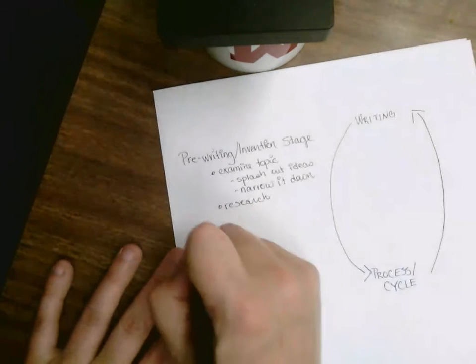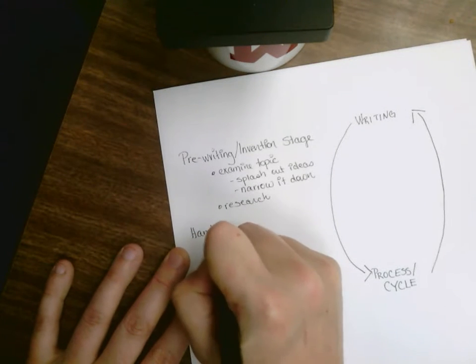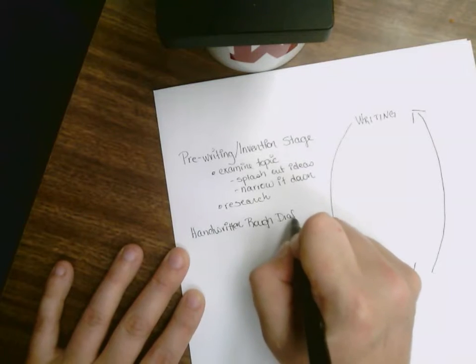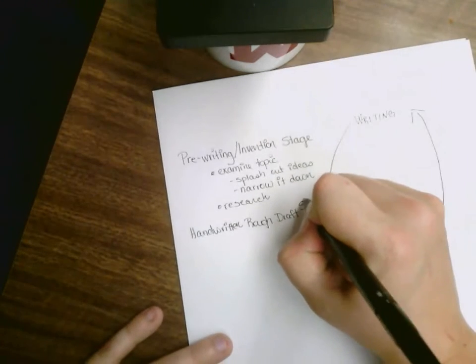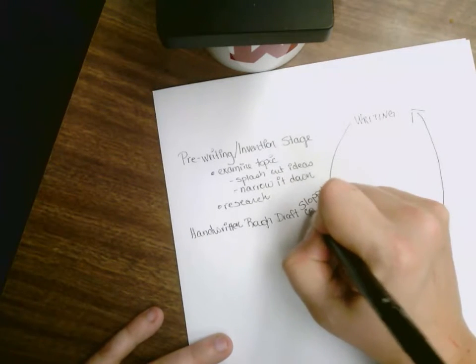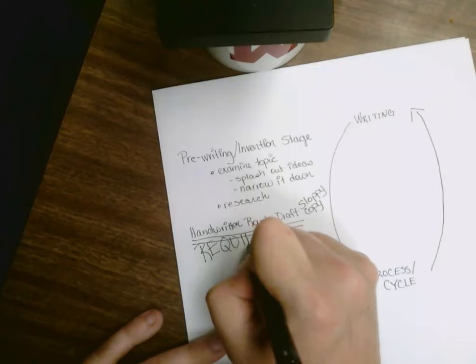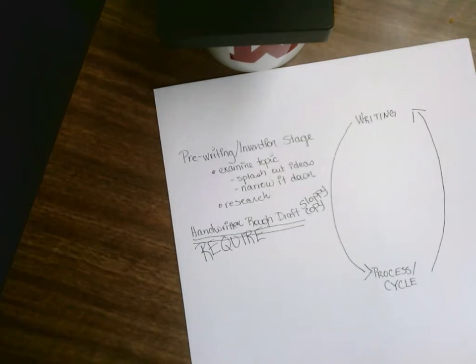The next step that I look at is the handwritten rough draft. This is often referred to as the sloppy copy. I'm going to require, and I'm going to put this here because I find that this step is the most important of all the steps. Individuals, I found, want to skip this step and immediately go to the typing phase. I require that you do a handwritten rough draft.